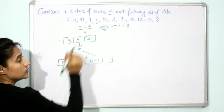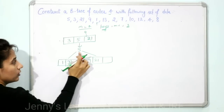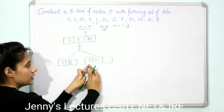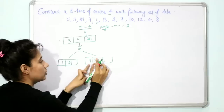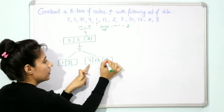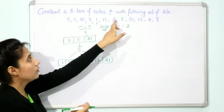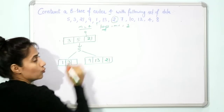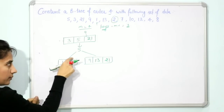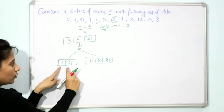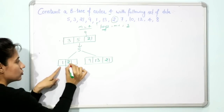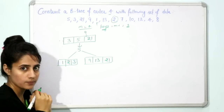Next is 13. Compare 13 with 5 — it is greater, so we go to the right part. 13 is greater than 9 but less than 21, so 13 is inserted between them: the node becomes [9, 13, 21]. Next is 2. Since 2 is less than 5, we go left. 2 is greater than 1 and less than 3, so 2 is inserted between them: the node becomes [1, 2, 3].